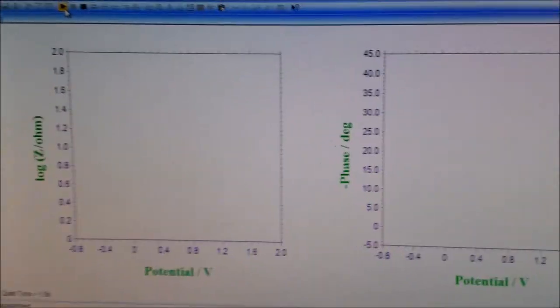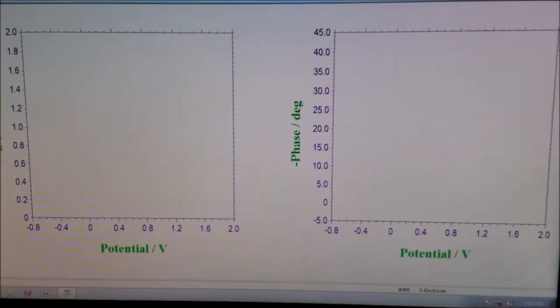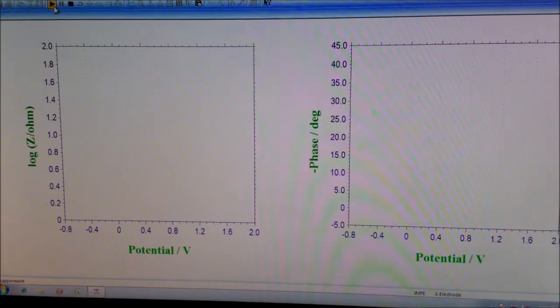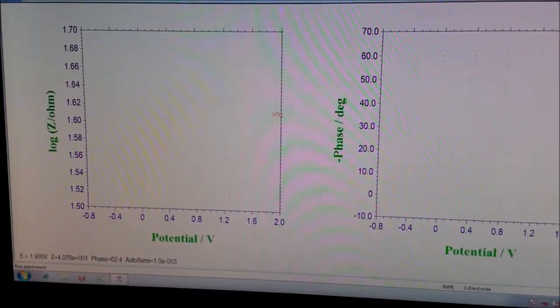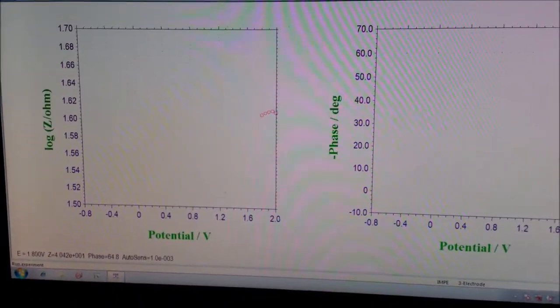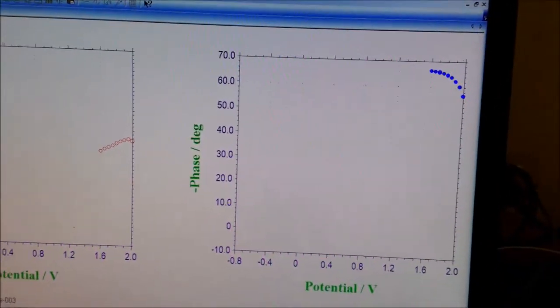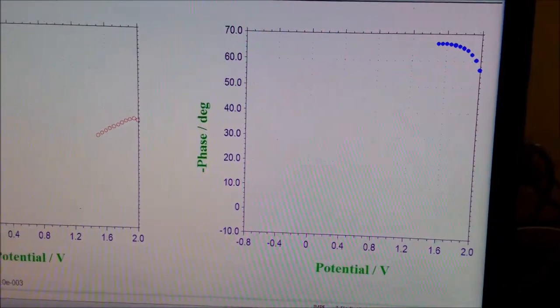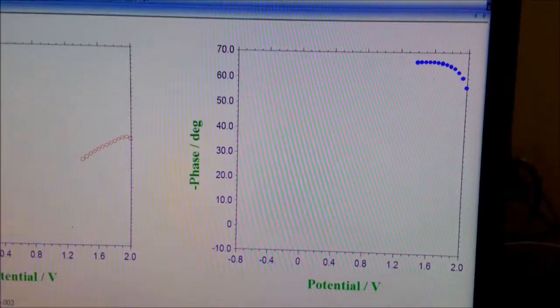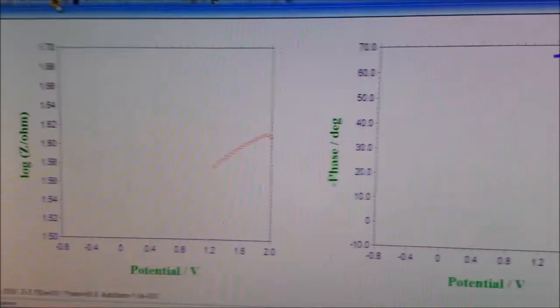You can see that two windows are coming here. The left window shows log Z versus potential, and the right window depicts the minus phase versus potential plot. It will take some time.